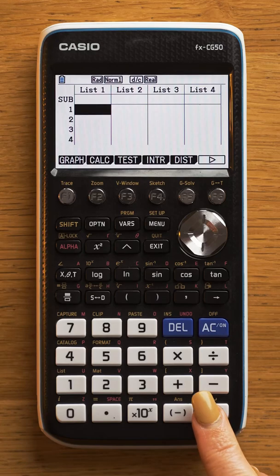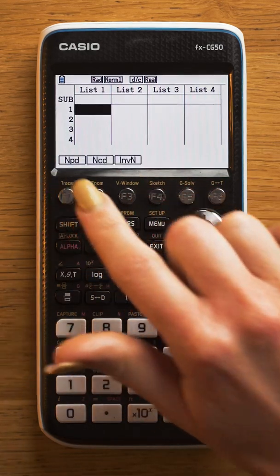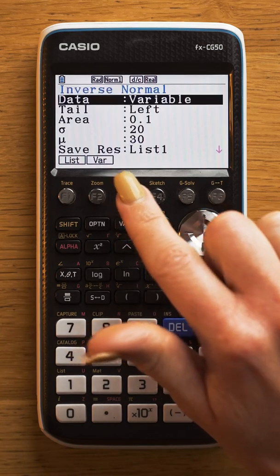Click into statistics, then into distribution, and go to F1 for normal, then F3 for the inverse normal.